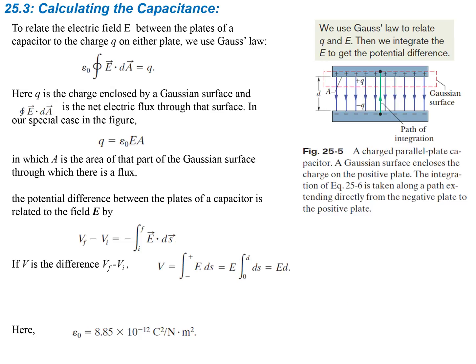To calculate capacitance, to relate the electric field E between the plates of a capacitor, we're going to use Gauss's law and relate that to the charge on either plate. Using Gauss's law, we create our Gaussian surface — shown as a dotted red line — where part of the surface runs through the center of the parallel plate, and the other part goes through the electric field between the two plates. Using Gauss's law, Q is the charge enclosed by the Gaussian surface, and the integral of E dot dA is the net electric flux through the surface. In our special case, Q is equal to ε₀ E A, because of the symmetry, where A is the area of the part of the Gaussian surface through which there is flux, giving a constant electric field.